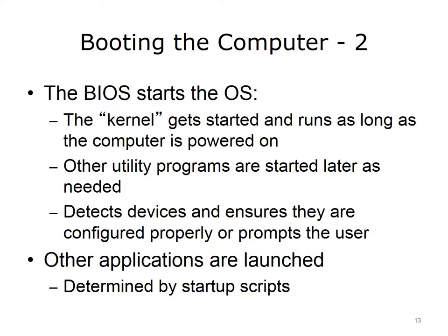The kernel starts and continues to run as long as the computer is on. The kernel refers to the necessary core parts of the OS that need to run all the time. Next, other parts of the OS, such as utility programs, are started as needed. The OS then checks to see what devices are connected to the computer and whether they are configured properly. If something is not configured properly, the OS will try to reinstall the driver if it can. If it is unsuccessful, it generates error messages or pop-up windows prompting the user to locate and install the device driver. Other applications are then launched according to startup scripts defined by the user.